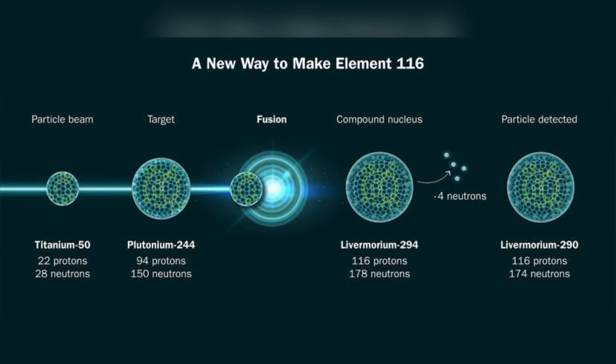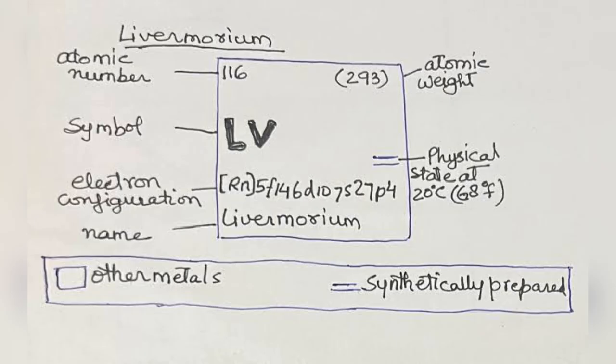Transuranium elements are elements with an atomic number greater than uranium. These elements are not found naturally and are typically synthesized in laboratories. Examples of these elements are plutonium, americium, curium, and now one more has been added: Livermorium.